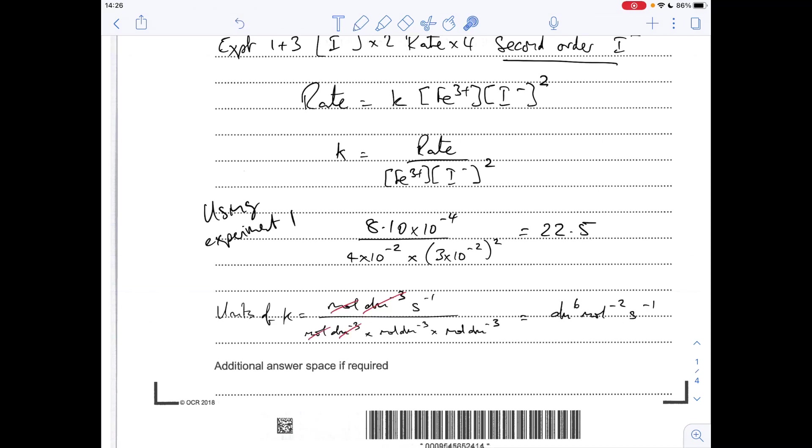So all I've done there is put the units of rate on the top, because that's what's happening there. And we've got a unit, moles per decimeter cubed for the Fe3+, and because this is second order, we've got moles per decimeter cubed squared. And then if you write it this way, it's quite easy to see what's going to cancel. And then these need to go up to the top, so moles times moles on the bottom is moles squared, so it's moles to the minus 2. dm to the minus 3 times dm to the minus 3 is dm to the minus 6 on the bottom, which is to the plus 6 on the top.